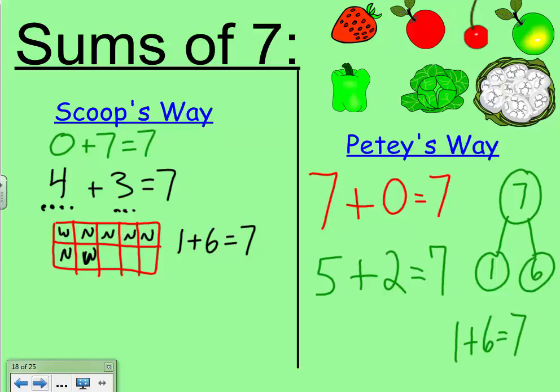So, there are 2 ways that we didn't write the equations that are still possibilities. Use the commutative property to tell your teacher what are the 2 ways that Scoop and Petey missed.